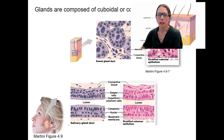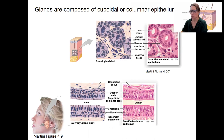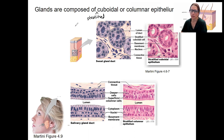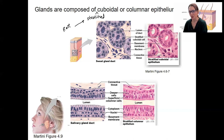To remind you, glands are composed of cuboidal or columnar epithelium and typically stratified. So it is the rare case where we have this type of tissue. Sweat glands are multiple layers — stratified cuboidal epithelium — and salivary glands are multiple layers — stratified columnar epithelium. You saw this before with tissue types.